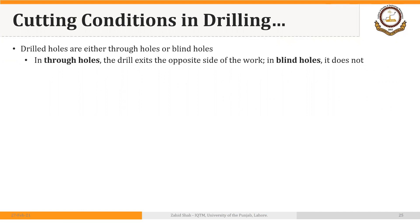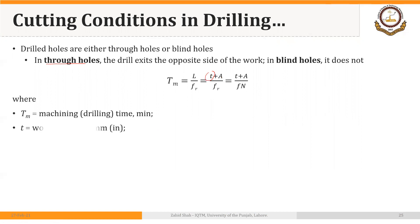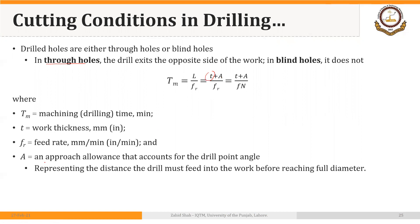Drilled holes are either through holes or blind holes. In through holes, the drill exits the opposite side of the work; in blind holes, it does not. The formula to calculate machining time is the same as in the case of turning: it is the length of cut divided by feed rate. In the case of drilling, the length of cut is the distance the drill moves into the workpiece. For through holes, it is the thickness plus approach allowance A. Feed rate equals feed multiplied by RPM.